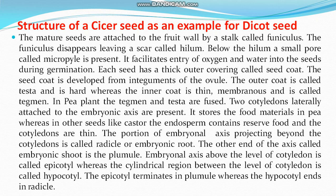In a pea plant, the tegmen and testa are fused. Two cotyledons laterally attached to the embryonic axis are present; they store food material in pea. In other seeds like castor, the endosperm contains the reserve food and the cotyledons are thin. The portion of the embryonal axis projecting beyond the cotyledons is called the radicle or embryonic root. The other end of the axis is called the embryonic shoot or plumule.